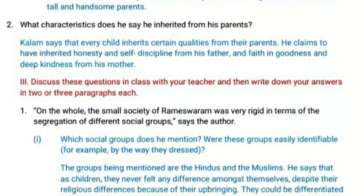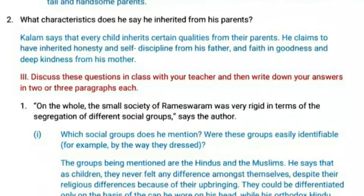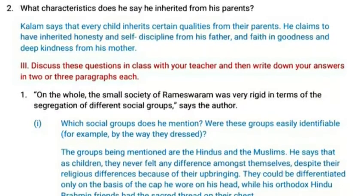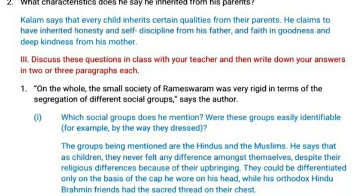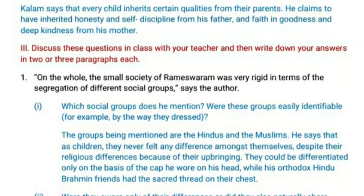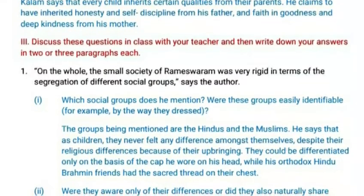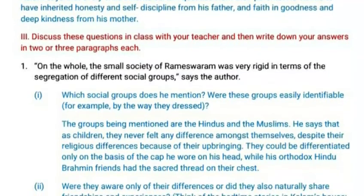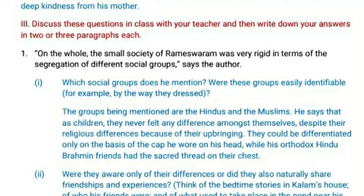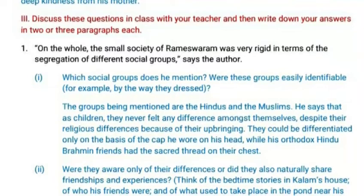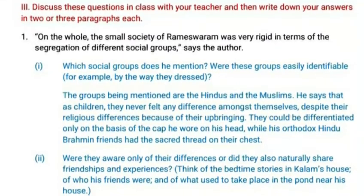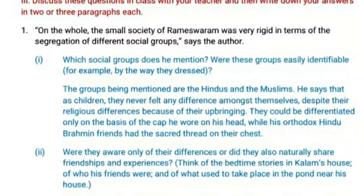Section III, Question 1: On the whole, the small society of Rameshwaram was very rigid in terms of segregation of different social groups. Which social groups does he mention? Were these groups easily identifiable? The two groups mentioned are the Hindus and the Muslims. As children they never felt any difference amongst themselves despite their religious differences, because of their upbringing. They could be differentiated only on the basis of the cap Kalam wore on his head, while his orthodox Hindu Brahmin friends had the sacred thread on their chest.